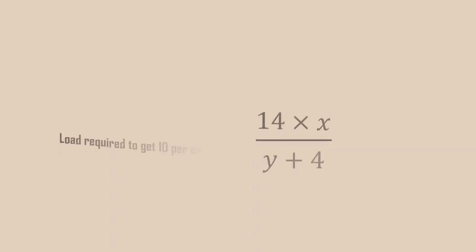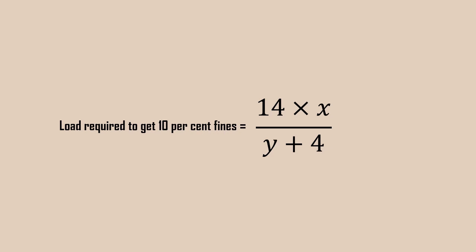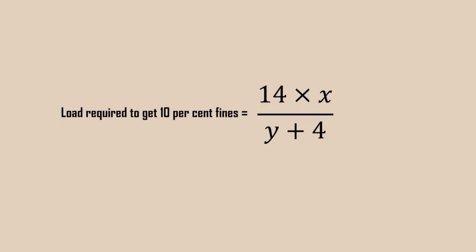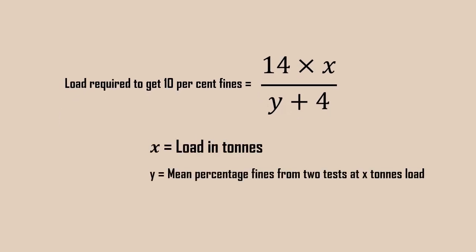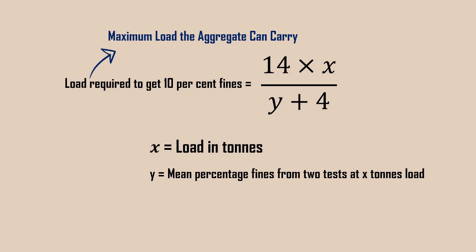Then, the load required to get 10% fines is calculated by the equation (14 + x) divided by (y + 4), where x is the load in tons and y is the mean percentage fines from two tests at x tons load. This load denotes the maximum load the aggregate can carry, based on which the suitability of the aggregate is determined.